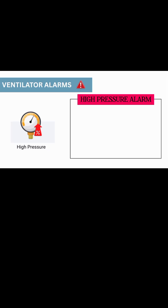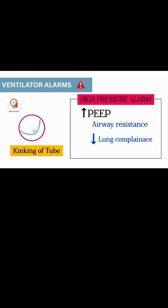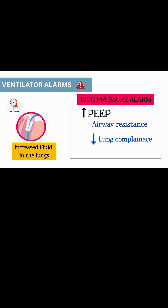High pressure alarm. This happens when increased PEEP is noted. The PEEP will be increased if there is any airway resistance or decreased lung compliance. So the situations are increased secretions, kicking of the tube, patient biting the tube, and increased fluids in the lungs.